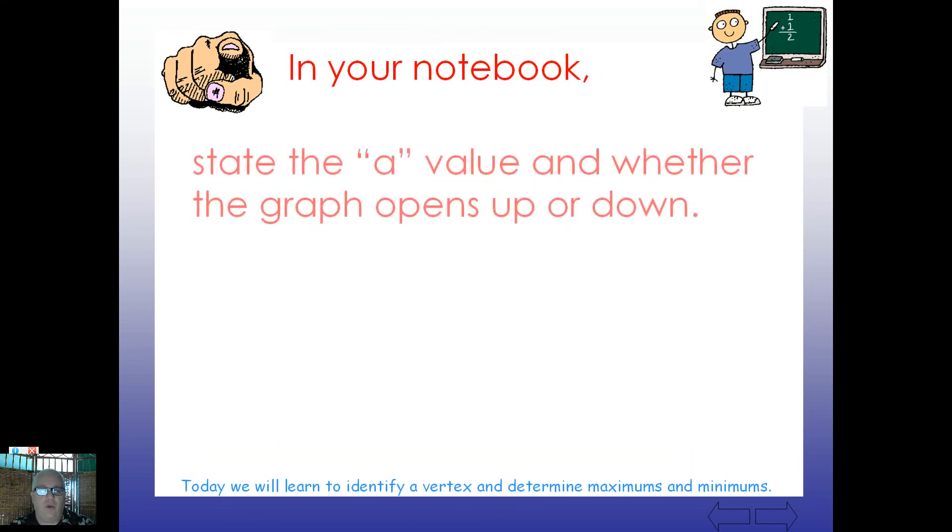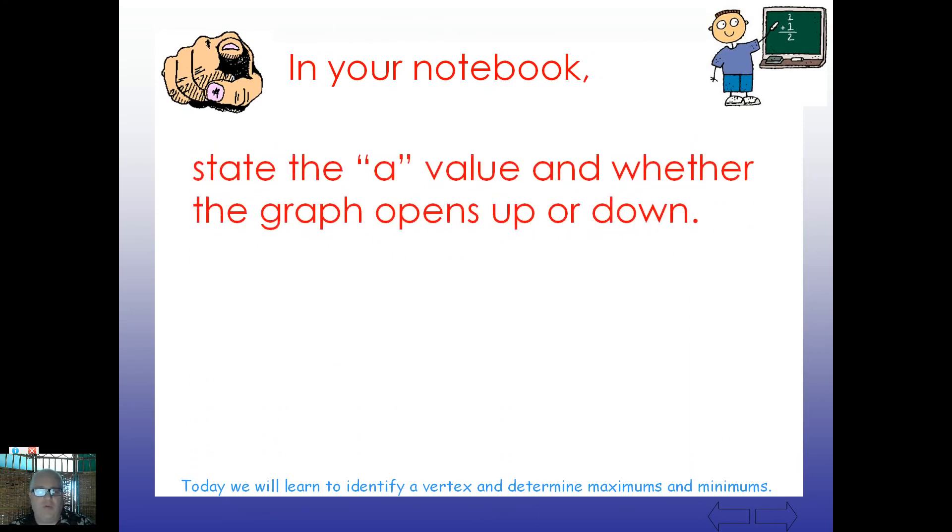In your notebook, state the a value and whether the graph opens upward or downward. So if we've got y equals negative 3x squared plus 4x. Taking a look here, what's the a value of this function? Do you agree that the a value is negative 3? If it's negative 3, is this going to open up or down? Negative values are going to open downward. That's correct.